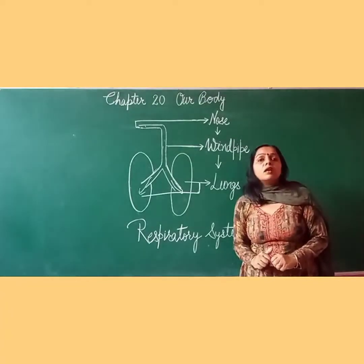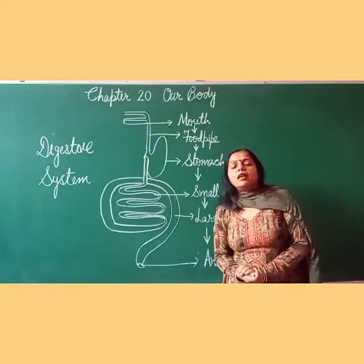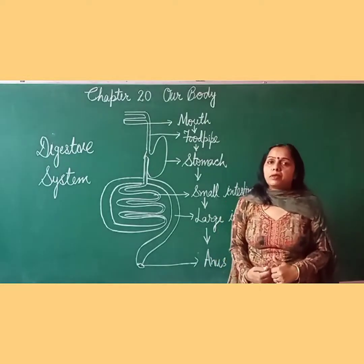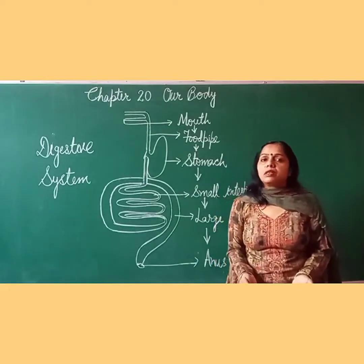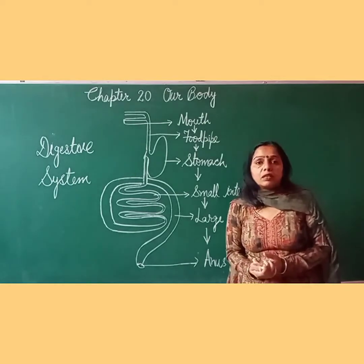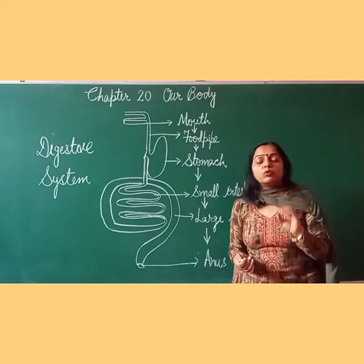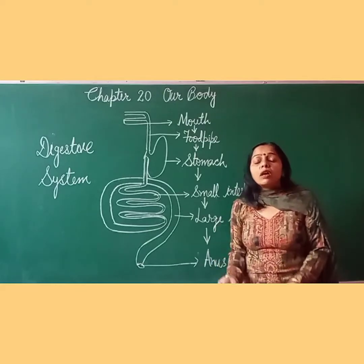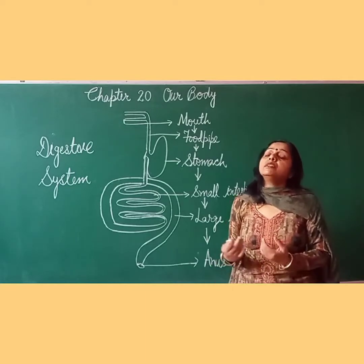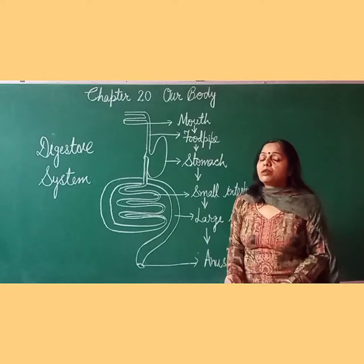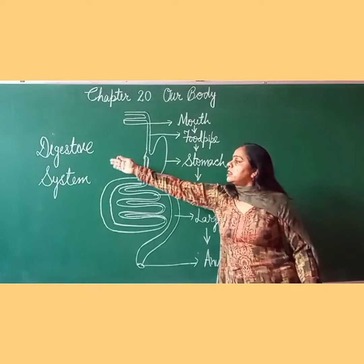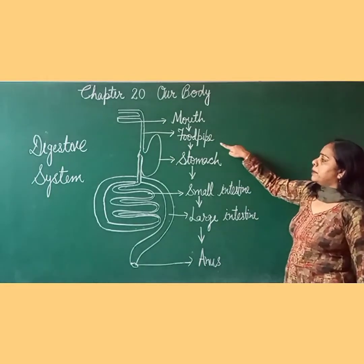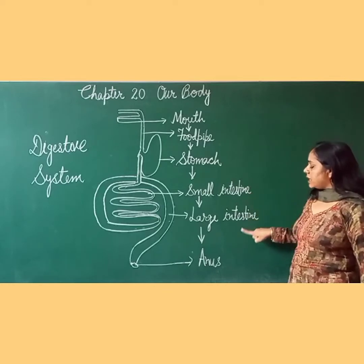Now we will do the digestive system. The digestive system is the system which helps us digest our food. The main organs of the digestive system are: mouth, food pipe, stomach, small intestine, large intestine, and anus.